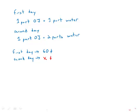They had a gallon of orange juice, a gallon of water for two gallons of orange aid. And the second day, they had a gallon of OJ and two gallons of water for three gallons of orange aid.